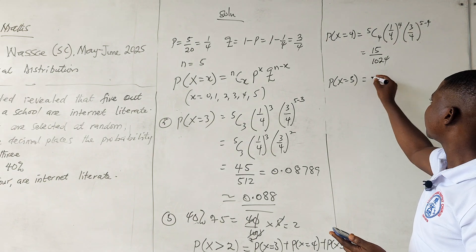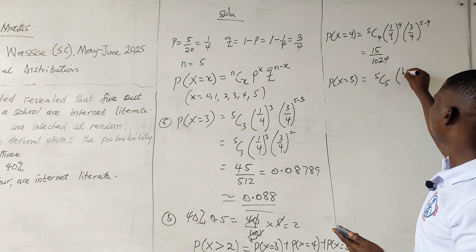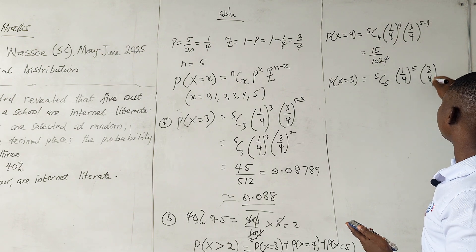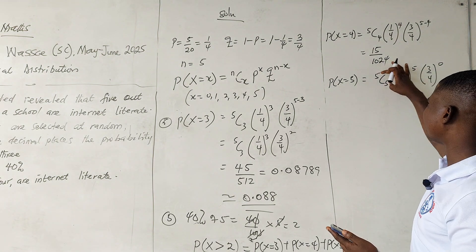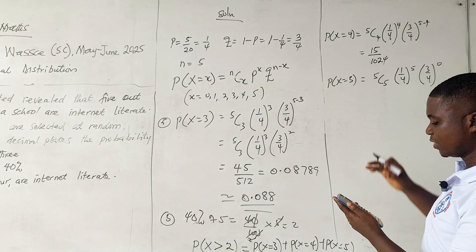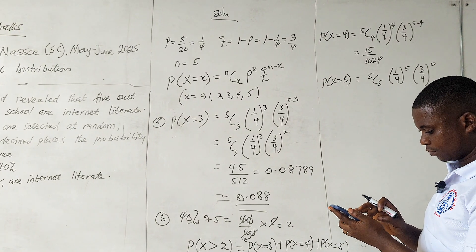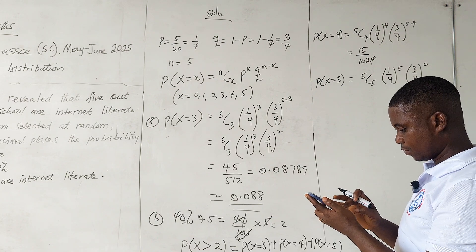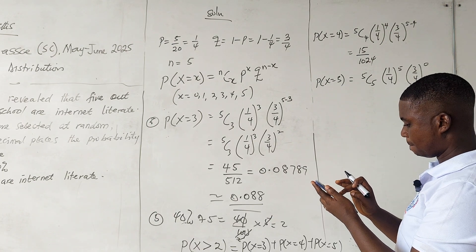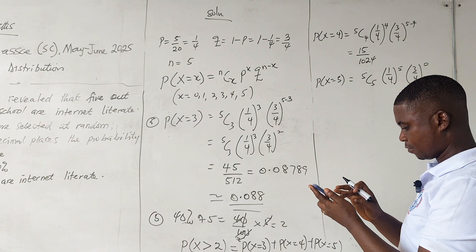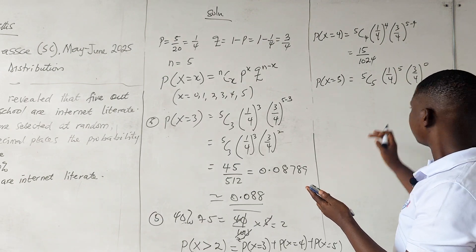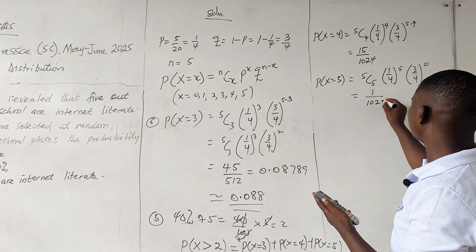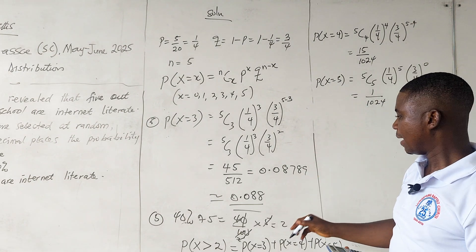For P(X=5): 5C5 × (1/4)^5 × (3/4)^(5-5). Since 5C5 = 1 and (3/4)^0 = 1, this simplifies to (1/4)^5 = 1/1024.